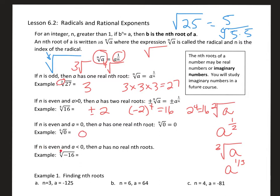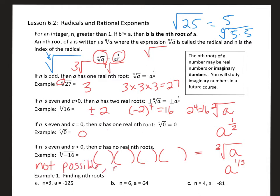If this is an even root and the number is less than 0, then it has no real roots — this is going to be an imaginary number. The nth roots of a number may be real or imaginary. We're going to study imaginary numbers later on in Algebra 1. You can't take the fourth root of negative 16 because there's no real number that when you multiply it four times gives you a negative number. There's an imaginary number, but not a real number, so you write 'not real' or 'not possible.'